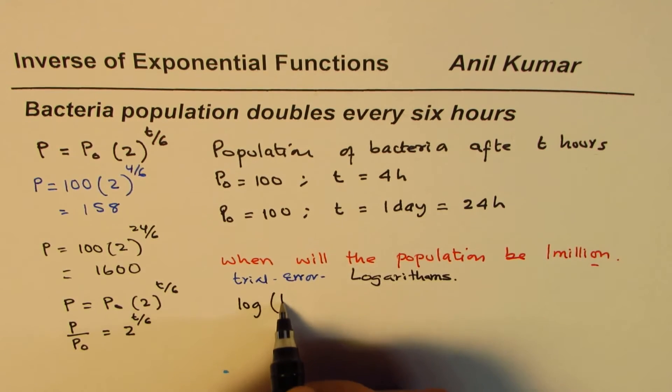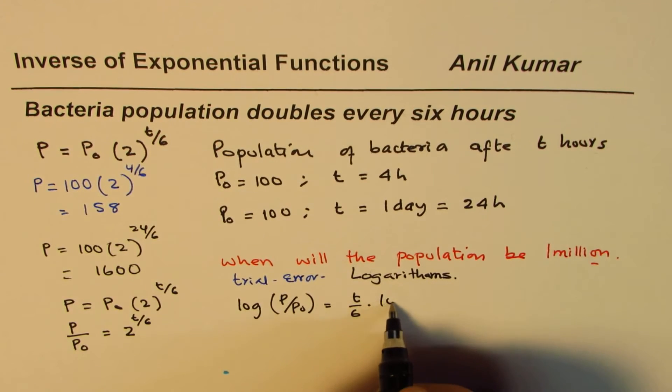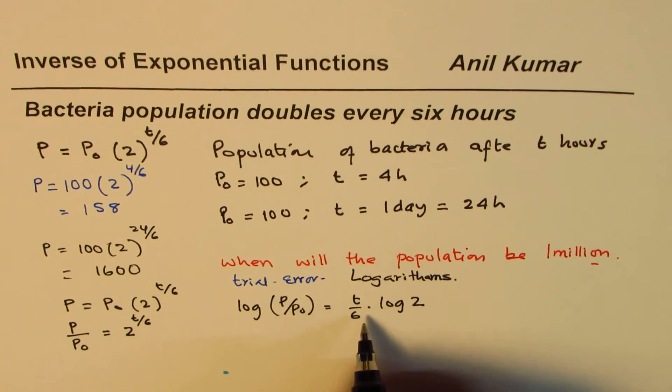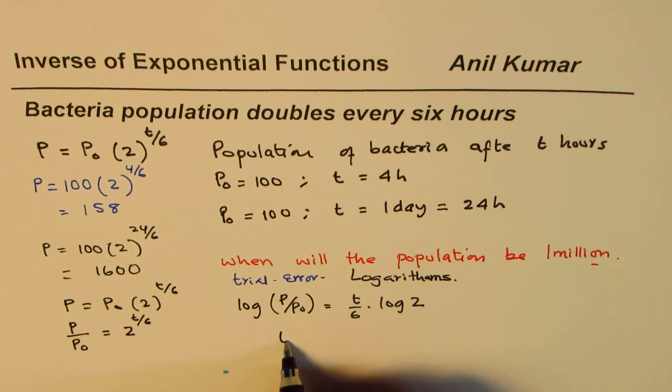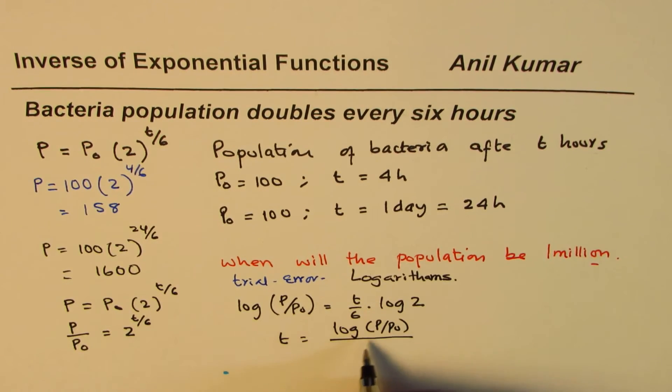The properties of logarithms say that if you take log of this, what you really get is log of P over P0 equals to t over 6 times log of 2. And this equation can be rearranged to find t as equals to log of P over P0 divided by log of 2 times 6.